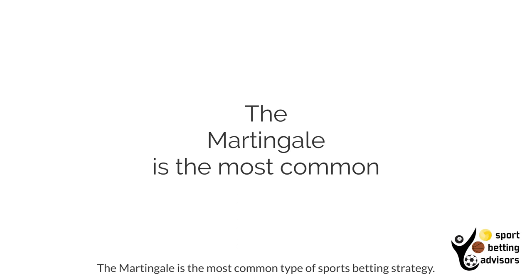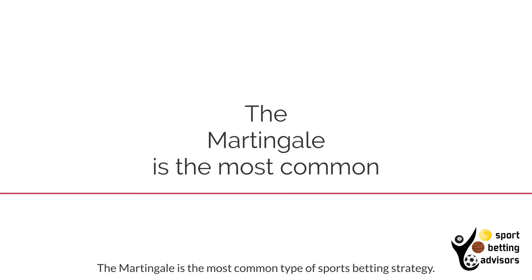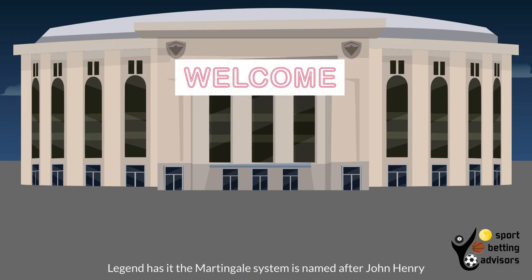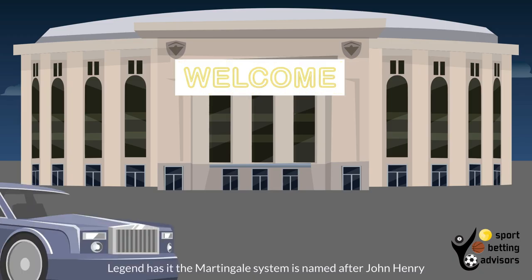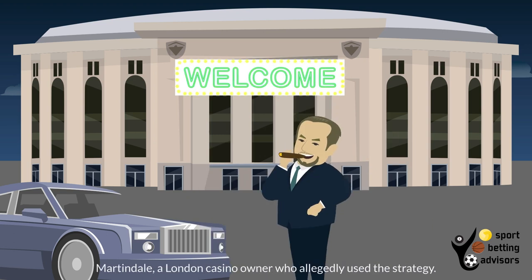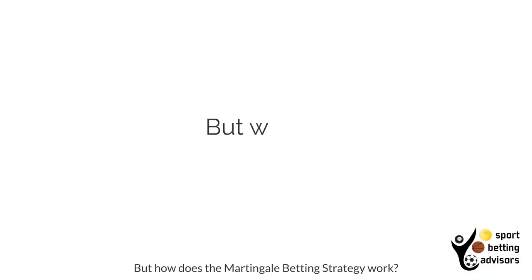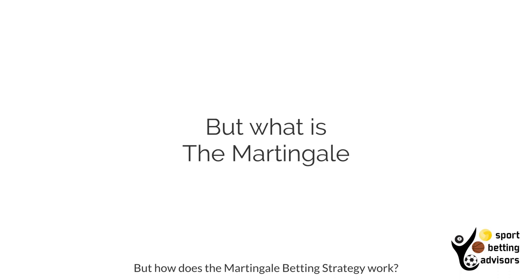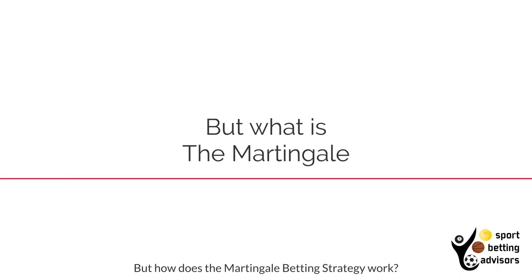The Martingale is the most common type of sports betting strategy. Legend has it the Martingale system is named after John Henry Martindale, a London casino owner who allegedly used the strategy. But how does the Martingale betting strategy work?